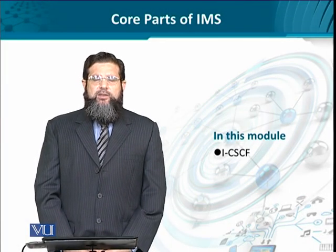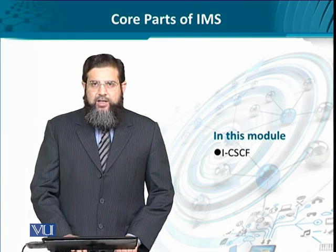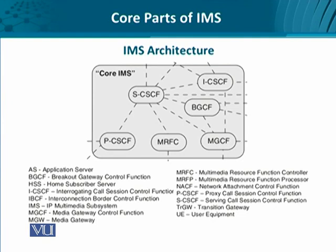Now we are going to look at the last CSCF known as the interrogating CSCF. When we say interrogating, it actually means it can be used to query or interrogate the location of the serving CSCF of different IMSs if multiple IMSs are interacting with each other. To put in simple words, if there are different administrative domains belonging to different telecom companies, each having its own IMS, in case a certain serving CSCF has to be discovered because the user equipment has to interact with it, the interrogating CSCF has a role to play.